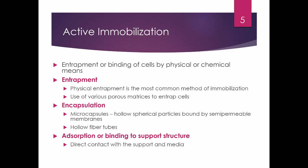There are several ways for immobilization. One is entrapment or binding of cells by physical or chemical means. Physical entrapment is the most common method, using porous matrices to entrap the cells. For encapsulation, you use hollow spherical particles bound by a semi-permeable membrane, and you can also use hollow fiber tubes. The last type is adsorption or binding, where there is direct contact and the cells must by themselves adhere to the support structure.